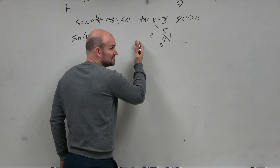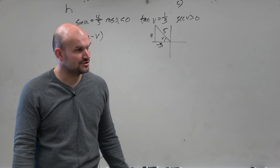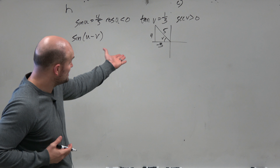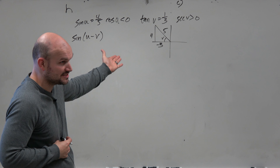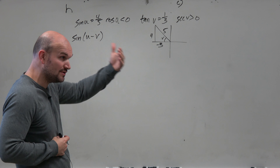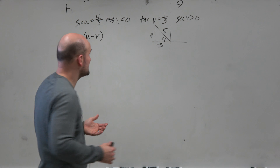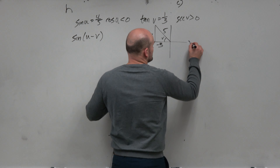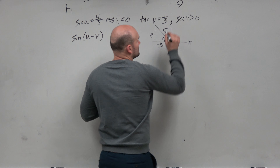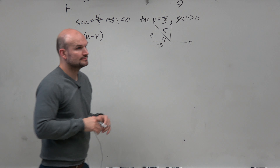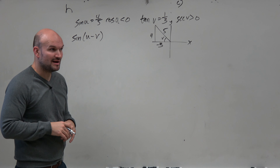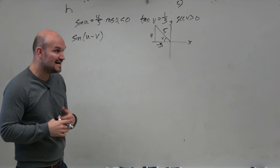1, 2, 3, or 4? Sine is positive only in the first and the second quadrant. In the first quadrant everything's positive, so it has to be the second quadrant. So the triangle looks like this. We have 4 over 5, and we can put a 3 there.